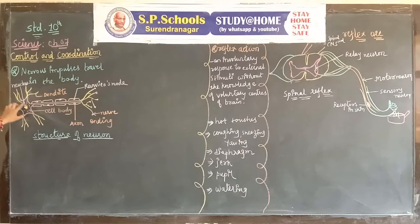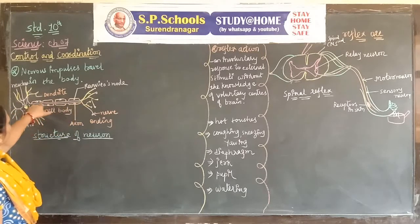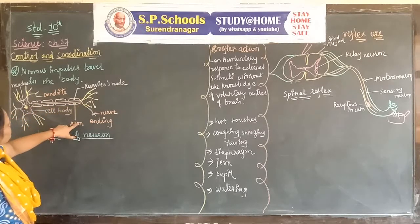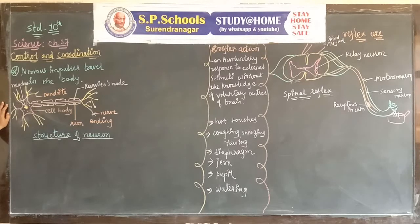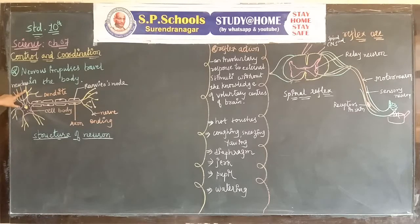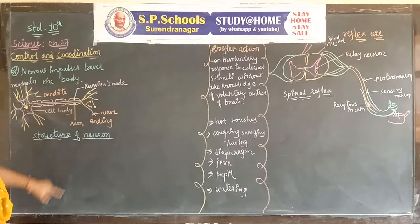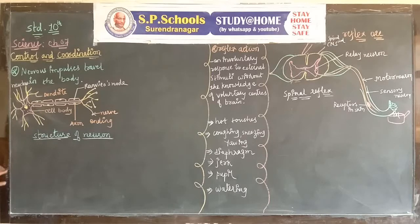Along with dendrites, we draw the axon — a long branch called the axon. At the end of the axon, we draw nerve endings. This is the structure of a neuron. Now let's understand how nerve impulses travel in the body. The pathway of nerve impulses: impulses get through the dendrite, then the cell body, then pass through the axon, and pass through the nerve endings. This is the pathway of nerve impulses.